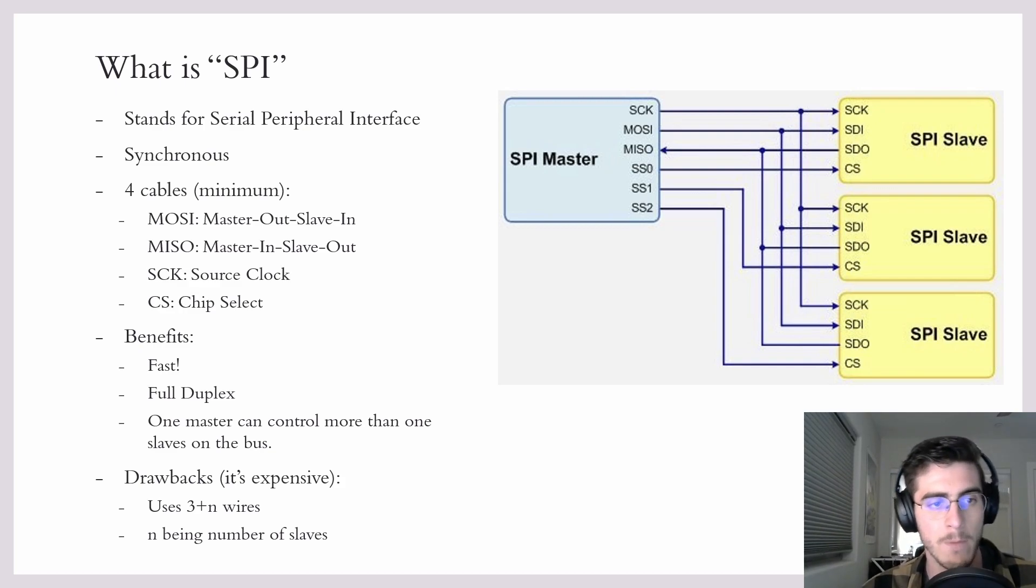This is MOSI (Master Out Slave In), MISO (Master In Slave Out), Source Clock, and Chip Select. The benefits of SPI is that it's very fast. In fact, it's one of the fastest because it is synchronous, and it's also full duplex.